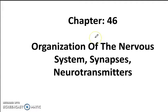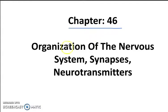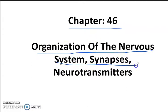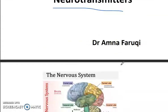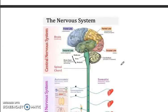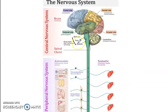Hello and good morning. Today our topic will be Chapter 46 from Guyton, which is the organization of the nervous system, synapses, and neurotransmitters. This will be made in three parts.